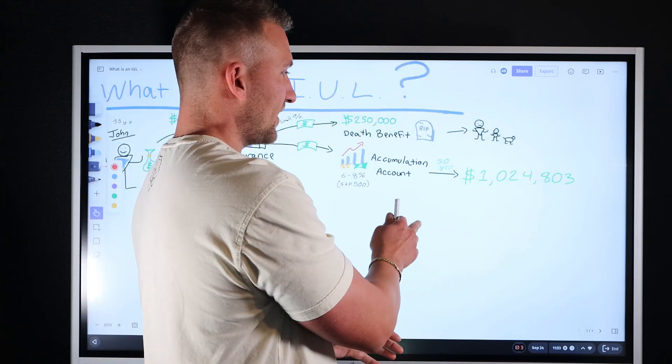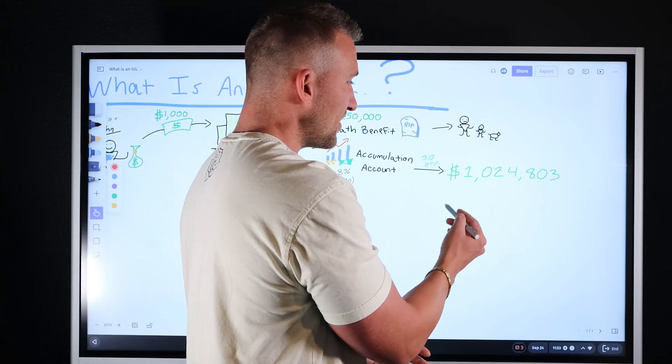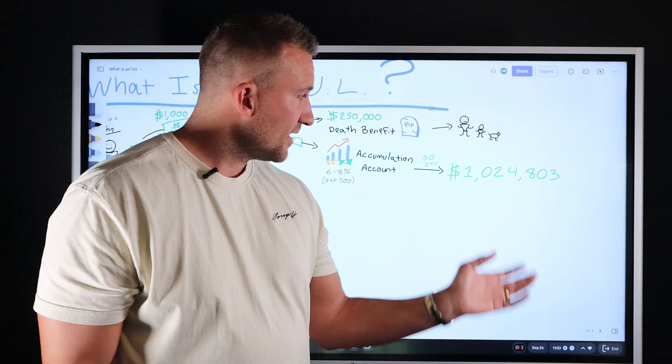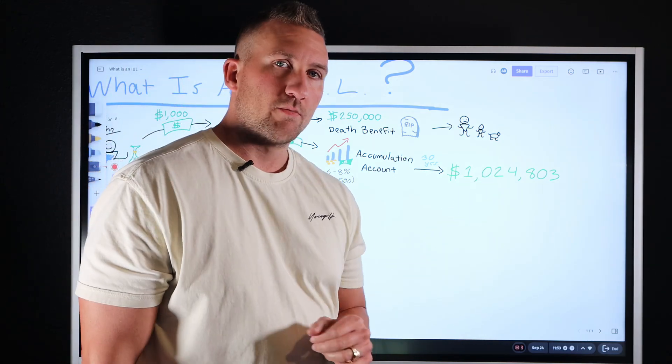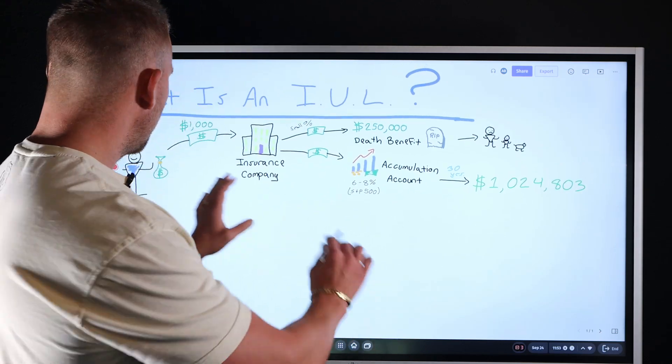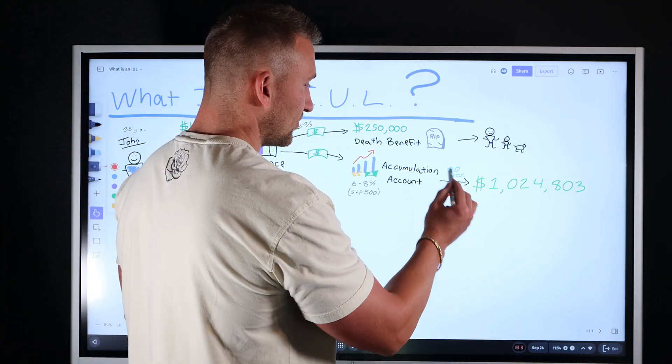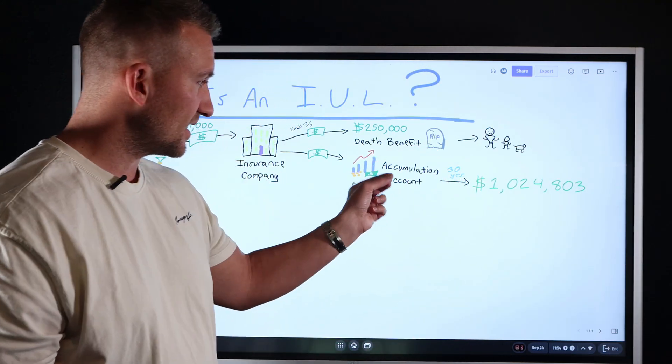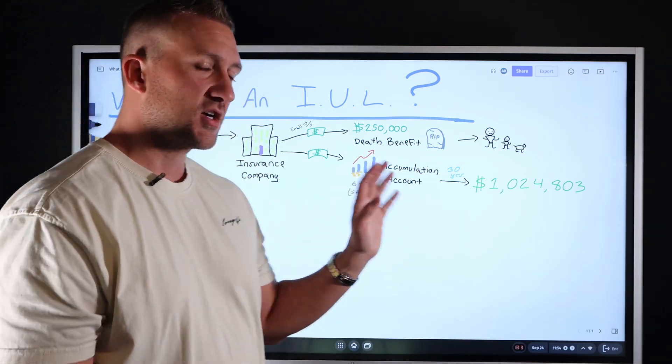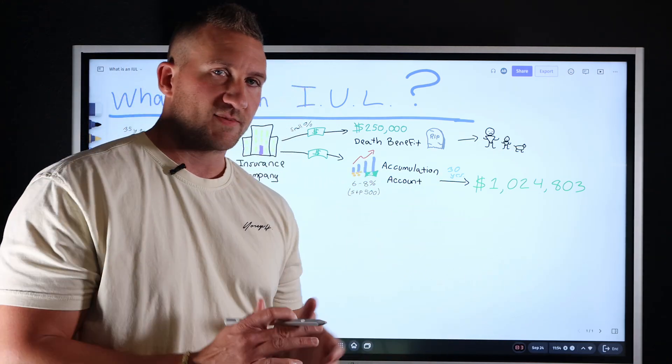And then over time, what's going to happen, let's just say 30 years from now, this account on an average 7% return would be projected to be roughly worth $1.02 million. Okay. And John has always been able to access money from his accumulation count. There's another account known as a cash value account that John can borrow loans from under very specific tax codes.